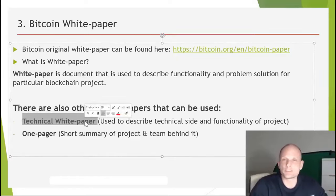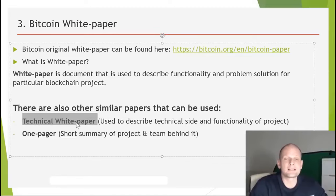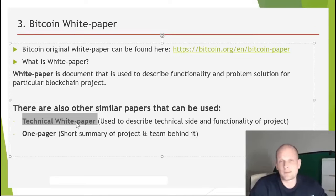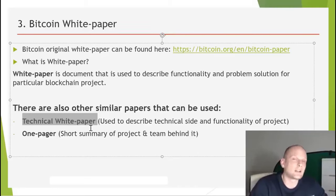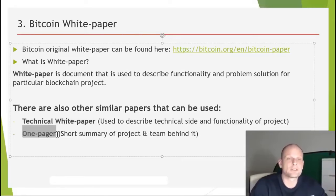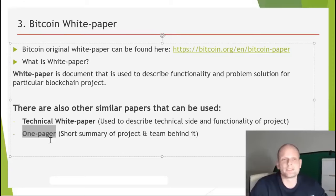There are also other similar documents in crypto projects. A technical whitepaper covers the technical side of a project's functionality — it's written in technical language for more technical people. A regular whitepaper explains everything in simple words so anyone can understand what the project is about and what problems it solves. A one-pager is a short summary — one or two pages — giving a brief description of a project and its theme.